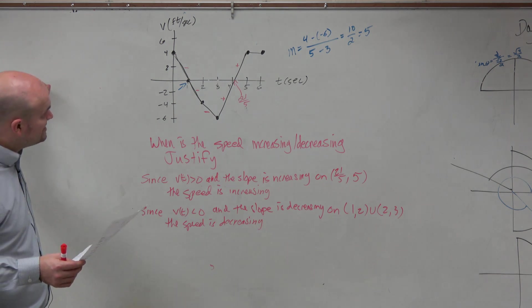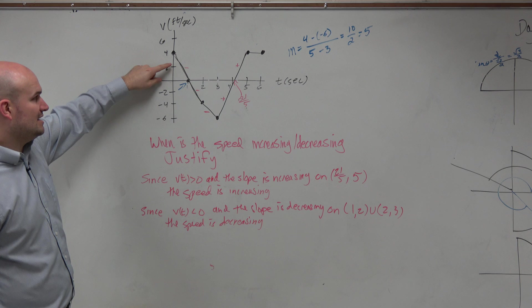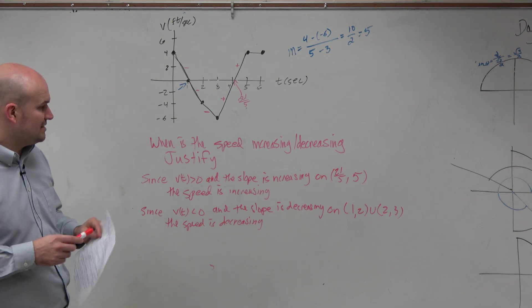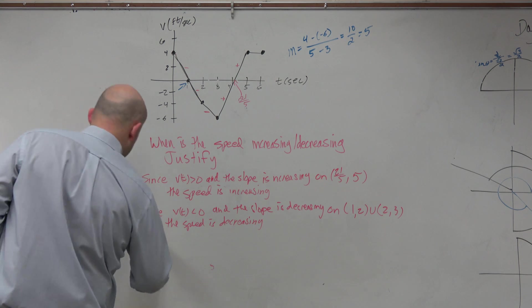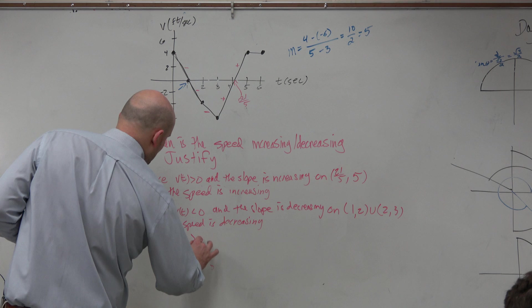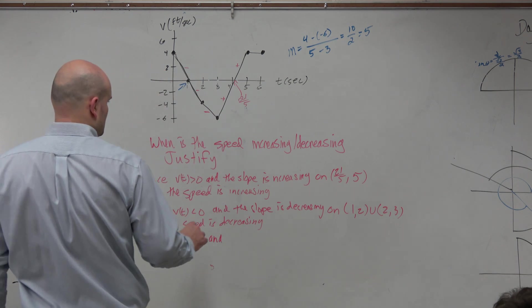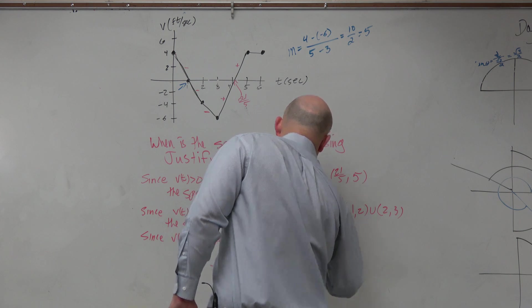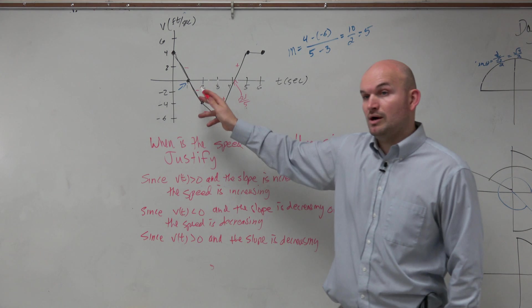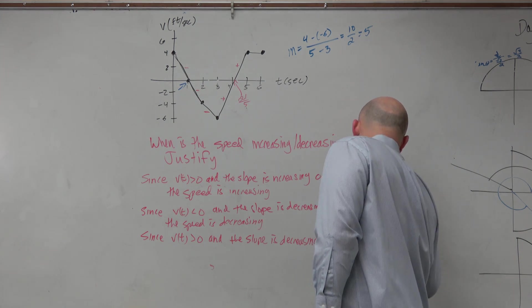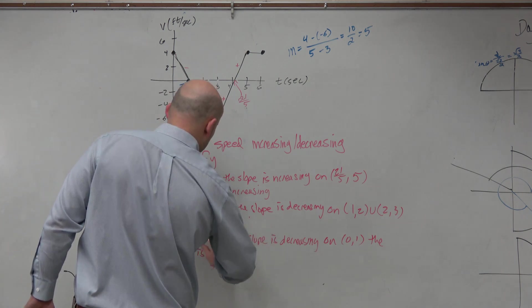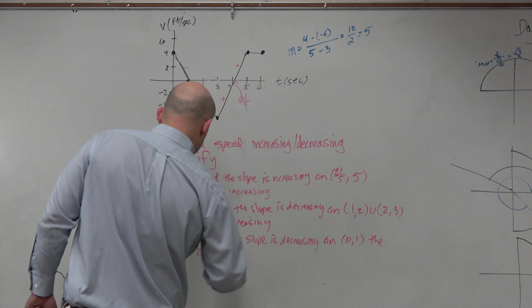Let's go and look at when is the particle decreasing. So it's decreasing when it's going to be negative and positive or it's going to be negative and positive. So you could say since v sub t is greater than 0 and the slope is decreasing. So when is the velocity positive and the slope is decreasing? From 0 to 1, right? On 0 to 1 we could say the speed, this was supposed to be increasing, right? Nobody corrected me on that. The speed is decreasing.